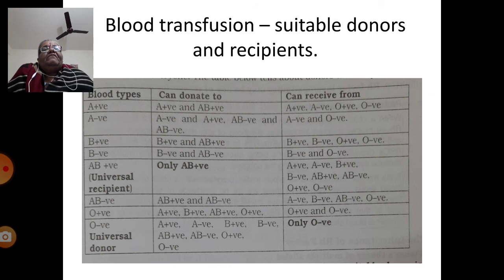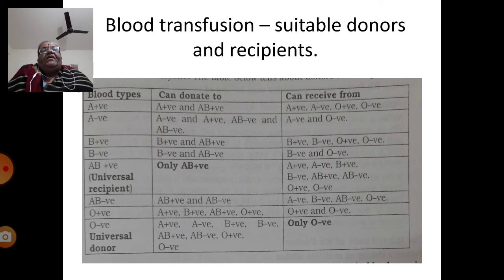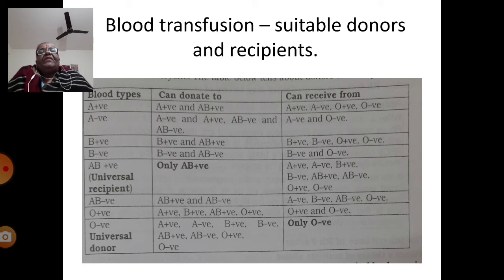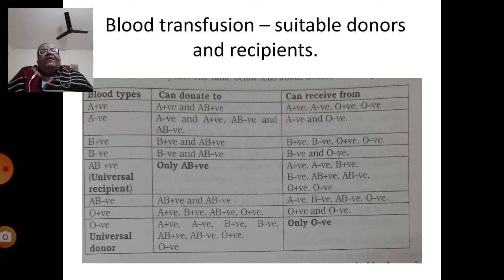This plate shows the suitable donors and recipients as far as blood transfusion is concerned. An A-positive person can donate to A-positive and AB-positive, and can receive from A-positive, A-negative, O-positive, and O-negative. An A-negative person can donate to A-negative, A-positive, AB-negative, and AB-positive, and can receive from A-negative and O-negative. AB-positive is a universal recipient but can donate blood only to AB-positive.